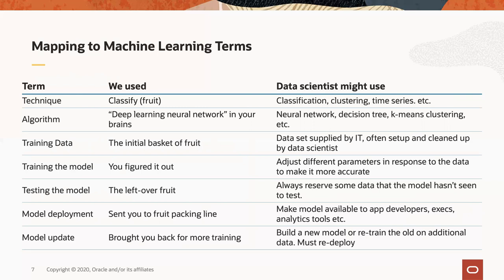All machine learning requires training data, and you started off with the initial basket of fruit. For this workshop, you have some data sets that were supplied to you for the exercise — those will often be supplied by IT, and maybe the data scientist is responsible for setup, cleanup, and working with that data to get it ready to model. Training the model is one of the core things that you do. Algorithms would adjust parameters and tweak the way they look at the data, splitting the data in different ways in order to make their responses more accurate.